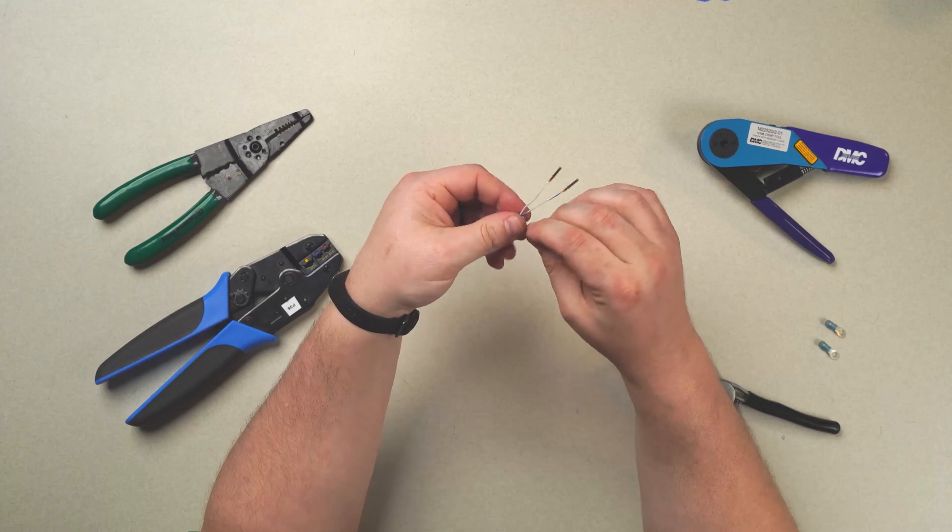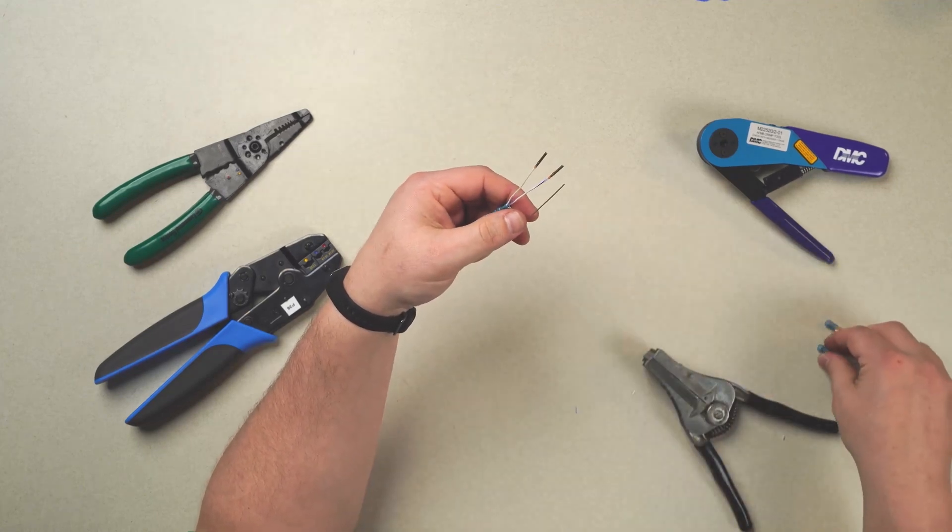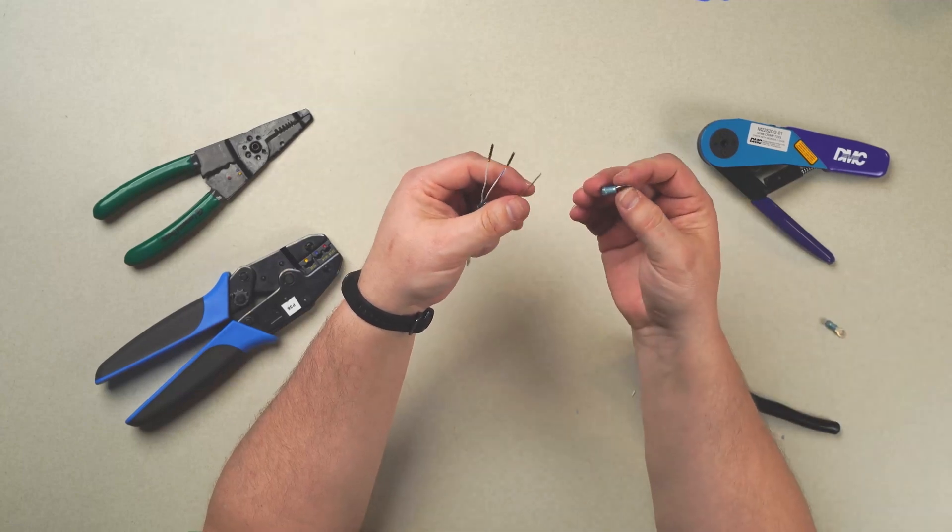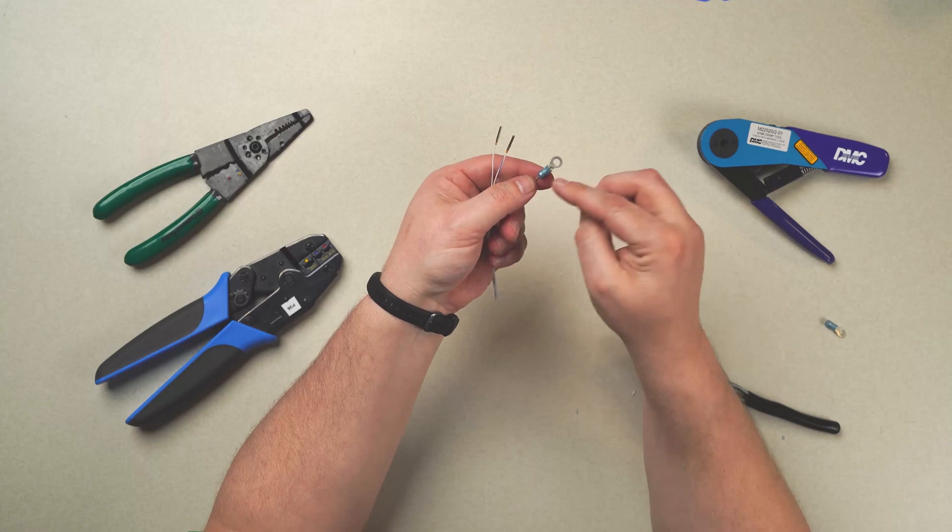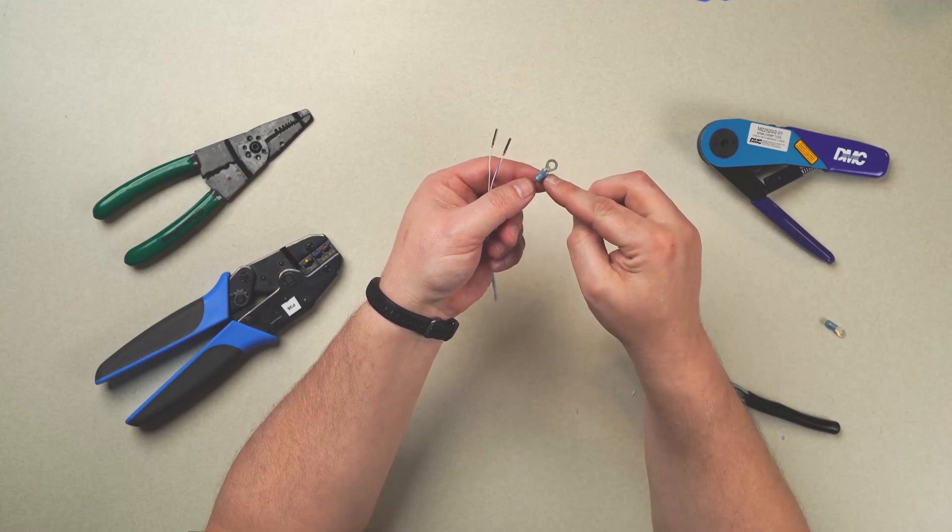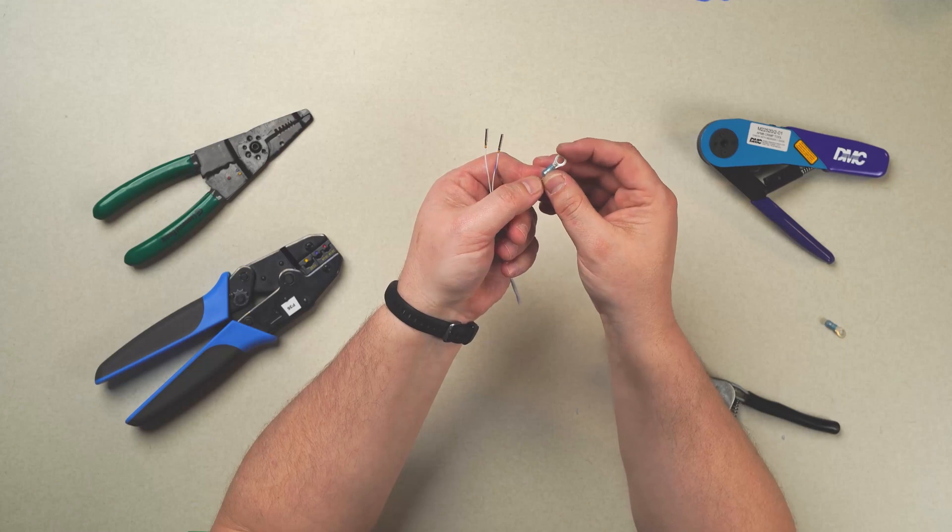Next, let's go ahead and crimp on our shield termination. First off, we're using the appropriate size. We want to make sure that we see exposed shield through the actual ring terminal itself. You see it goes all the way through.